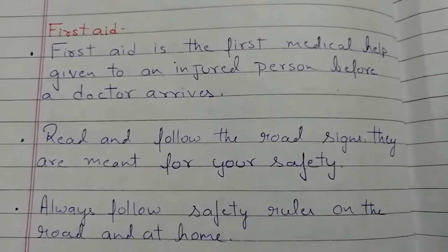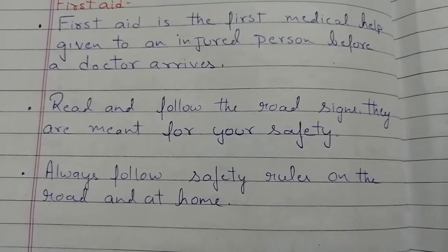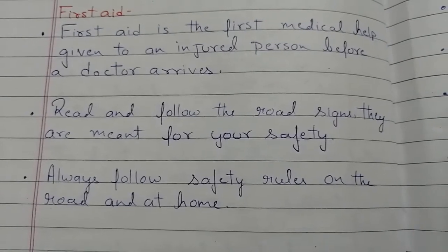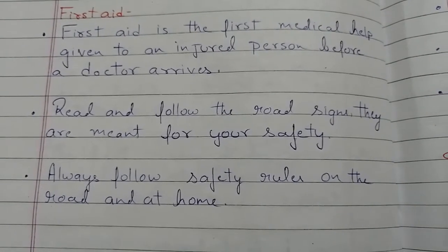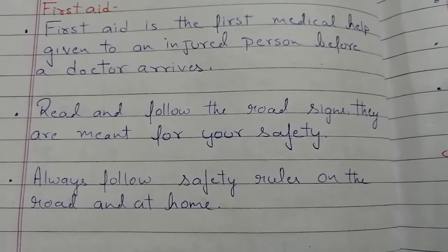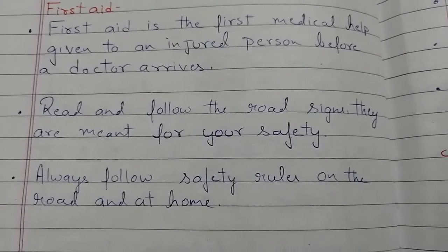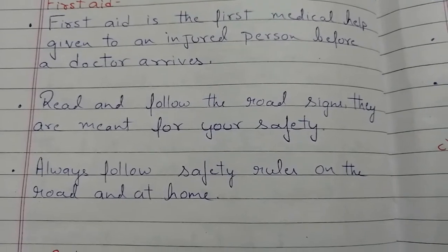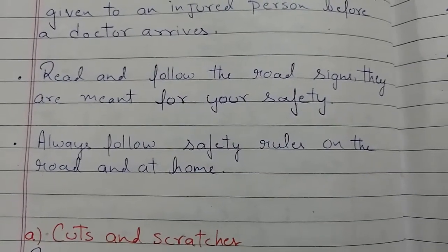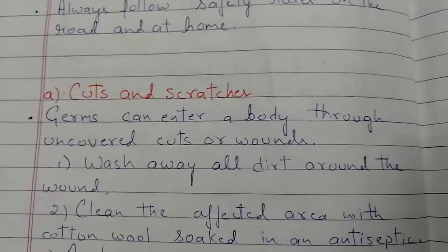Read and follow the road signs — they are meant for your safety. There are various road signs when you go outside, so you should know and follow those rules. Those rules are made for your safety only. Always follow safety rules on the road or at home.